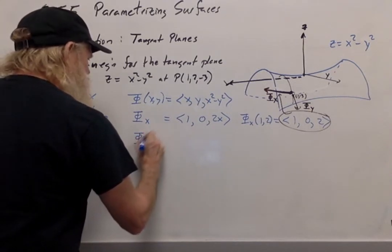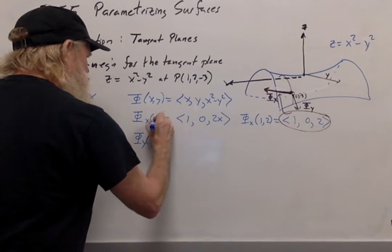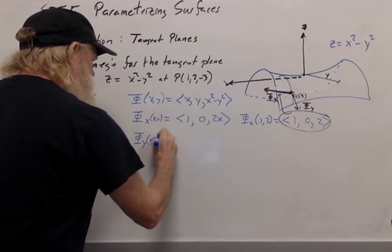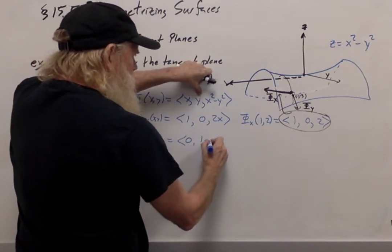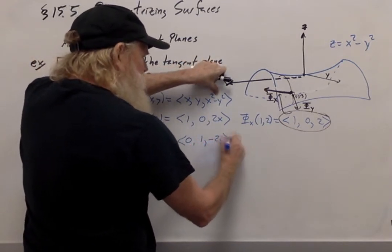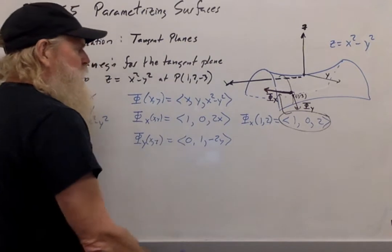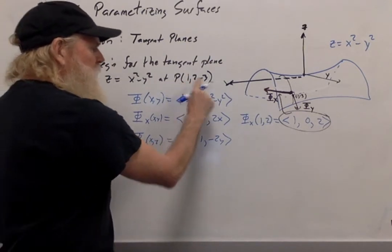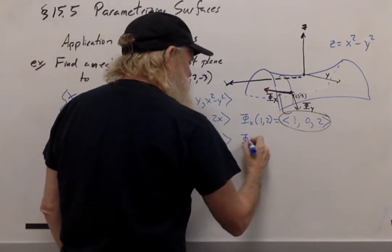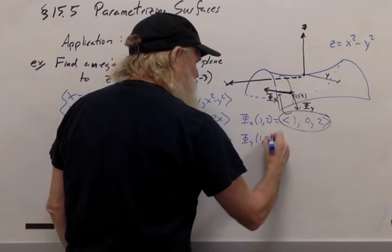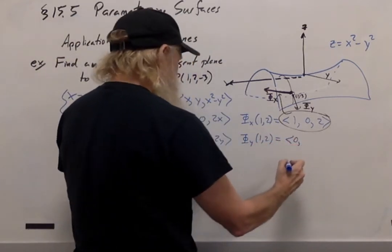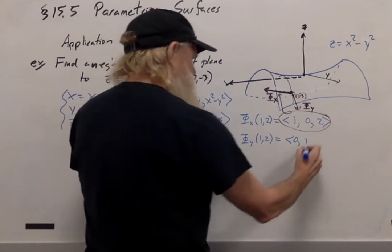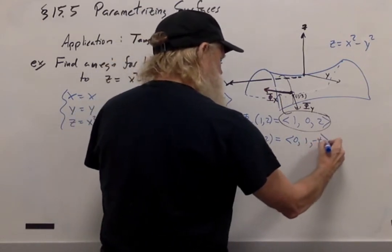In general, d phi dy at the point (x, y) is going to be (0, 1, -2y). So in particular, when x equals 1 and y equals 2, d phi dy of (1, 2) is going to be (0, 1, -4).